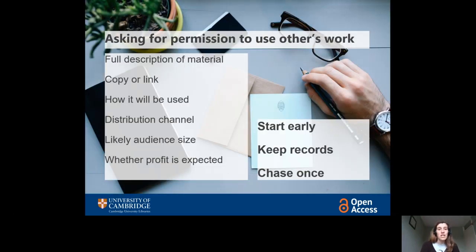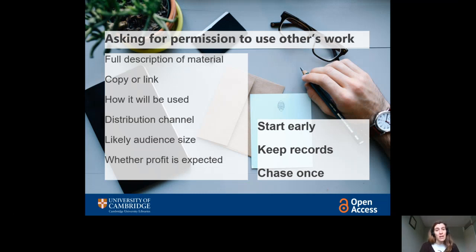You might well find yourself in the position of having to ask copyright holders for permission to reuse their work — for example, because you want to include an image in your article or use a graph in a presentation. You'll have to get in touch with them either by email or using automated publishers' systems. Remember, the copyright holder is not necessarily the author — in a lot of cases, particularly for journal articles, the copyright holder is likely to be the publisher. Try to find out who the copyright holder is and get in touch with them. You'll have to give them a full description of the material you want to use, how much of it, and ideally attach a copy or give them a link so they can see exactly what you're talking about. Describe in detail how it will be used and why you need that particular work.